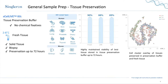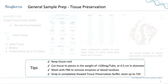Here I demonstrate results of brain tissue stored in the buffer for up to 72 hours, which still maintains high viability with basically no change from fresh to 72-hour storage. Looking at the UMAP plot, the cell clusters of tissues preserved for 24 and 72 hours overlay perfectly with fresh tissue, meaning transcriptomic changes are minimal.